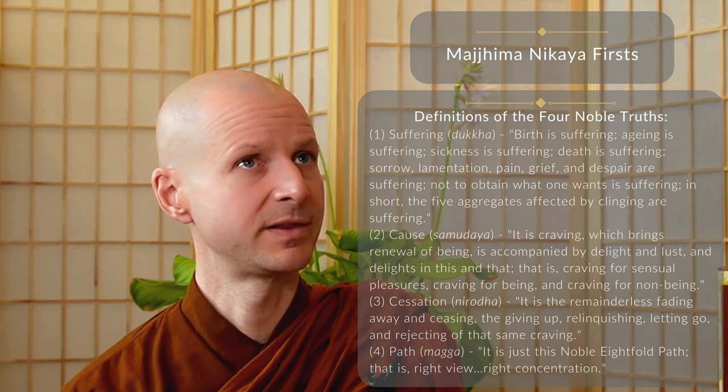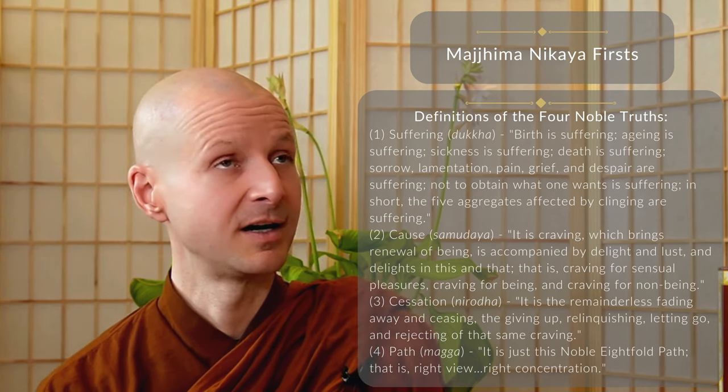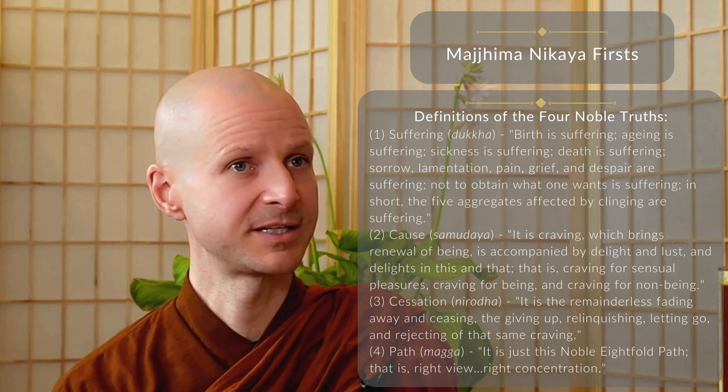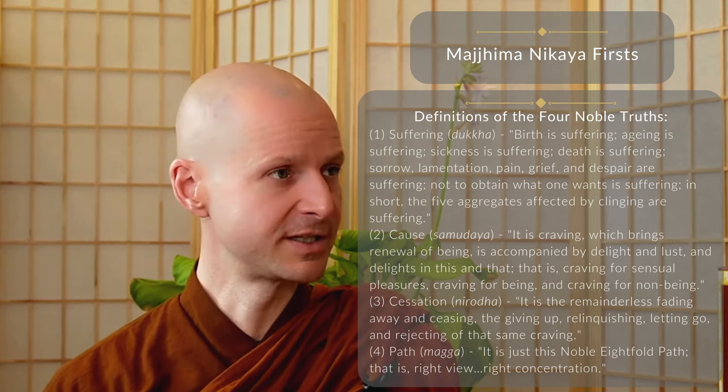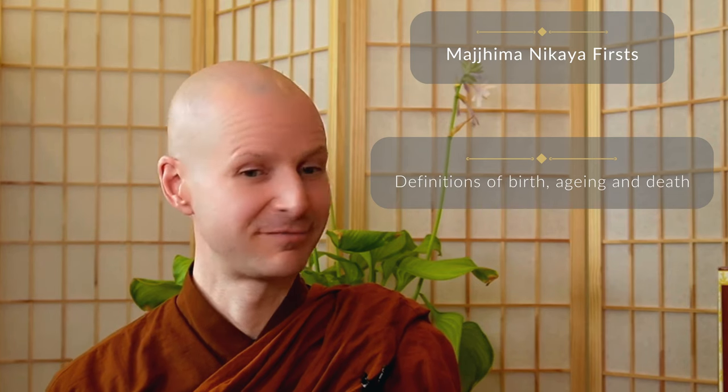What is there that's new in this discourse? A lot of specific definitions appear for the first time here: the four types of nutriment, the Four Noble Truths defined so explicitly with their traditional pericope — the stock phrases of dukkha, its cause, cessation, and the path leading to cessation, also found in the Dhammacakkha Sutta, the Buddha's first discourse. First definitions for aging, death, and birth. First meeting of six types of craving, six types of feeling, six types of contact, and six types of consciousness based on the different sense doors through which the mind contacts and craves the world.